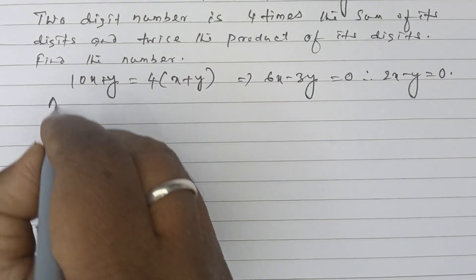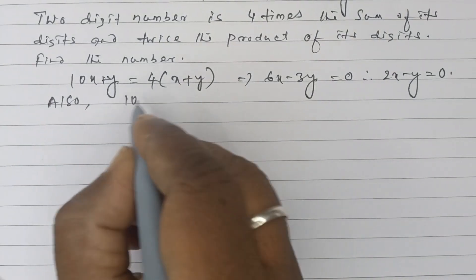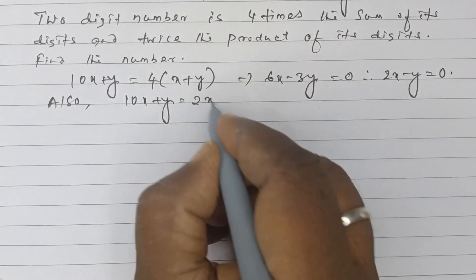Also in the second statement, 10x + y equals twice xy.